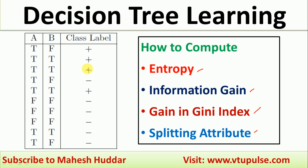In this case, we have been given a dataset with 10 examples. A and B are the two attributes and there are two class labels: one is positive and another one is negative.